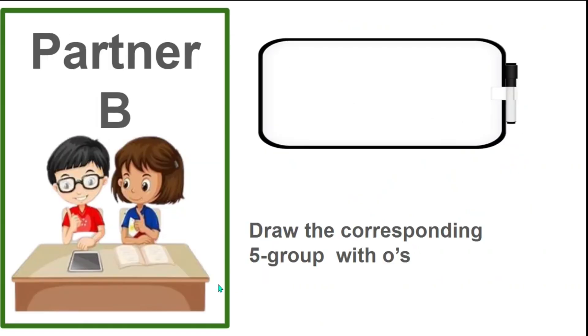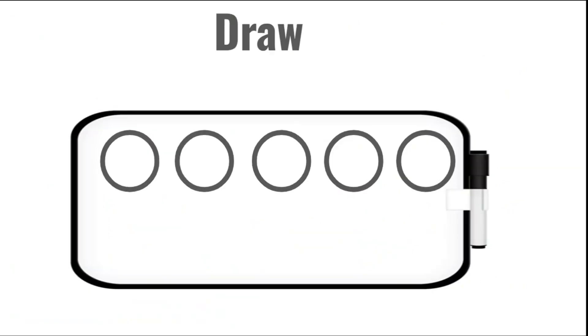Roll, count the dots. Now partner B, draw that many the five-group way. Does your drawing look like this?